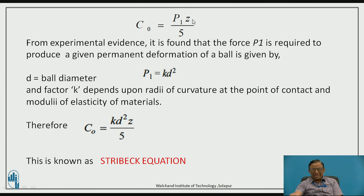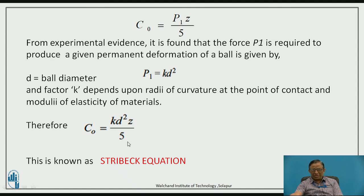By experimental evidence, with maximum deformation limited to 0.0001 times the ball diameter, the maximum load at that deformation is P1 = K·D², where D is the ball diameter and K is a material-dependent factor. Substituting into C0 = P1·Z/5, we get C0 = K·D²·Z/5. This is the Stribeck equation to estimate the static load capacity of a bearing, where C0 depends on the material constant K, ball diameter D, and number of balls Z.